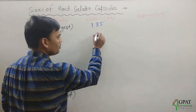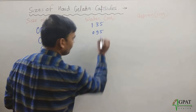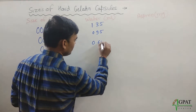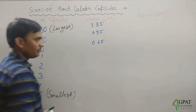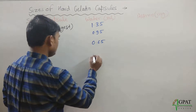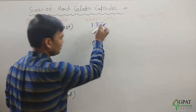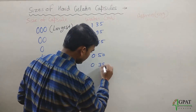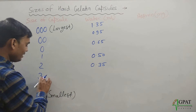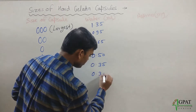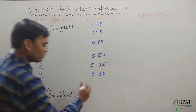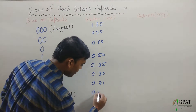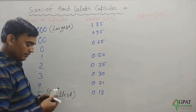In number two, 0.35 ml can be filled. In number three, 0.30 ml can be filled. In number four, 0.21 ml can be filled. While in number five — the smallest — 0.13 ml can be filled.